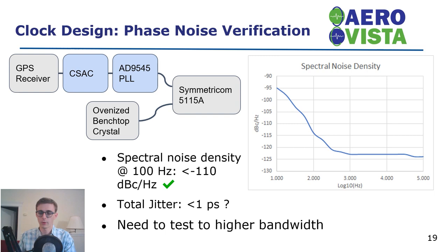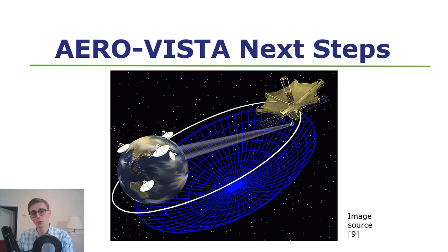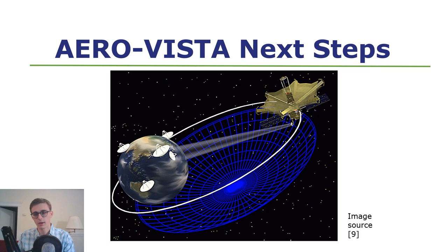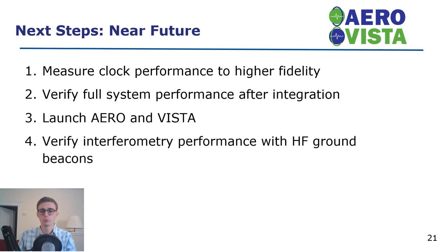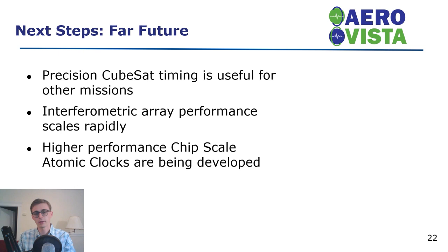I'll end with next steps for both AeroVista and orbital radio interferometry. Pictured here is a cartoon of an orbital VLBI satellite — the HALCA, or Highly Advanced Laboratory in Communications and Astronomy — showing how separation between receivers on Earth and on the satellite synthesizes a larger effective dish antenna. In the near future for AeroVista, we will measure the clock performance to higher fidelity using higher quality reference sources and verify full system performance after integration with the rest of the spacecraft. We will then launch AeroVista and verify that the two spacecraft can perform interferometry with HF ground beacons and the radio aurora. Looking farther into the future, precision CubeSat timing like we've developed for AeroVista can be useful for lots of other missions.